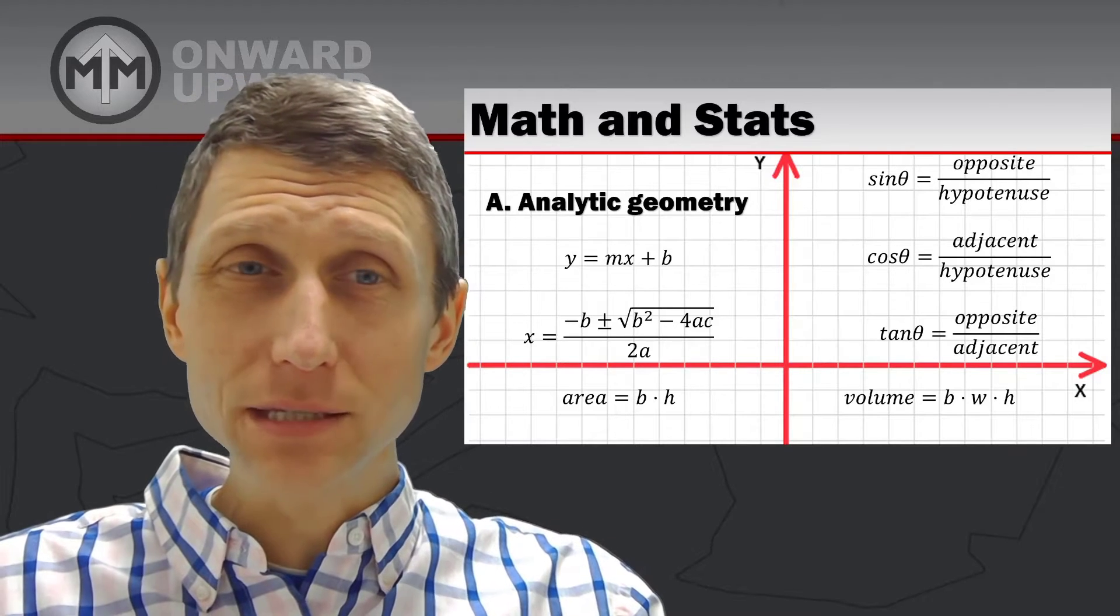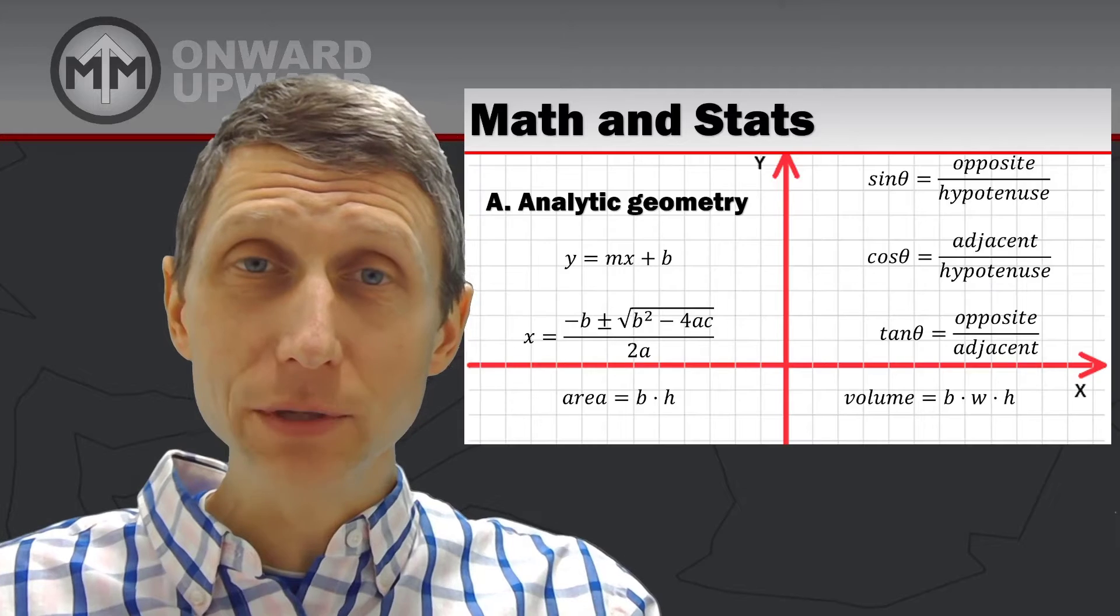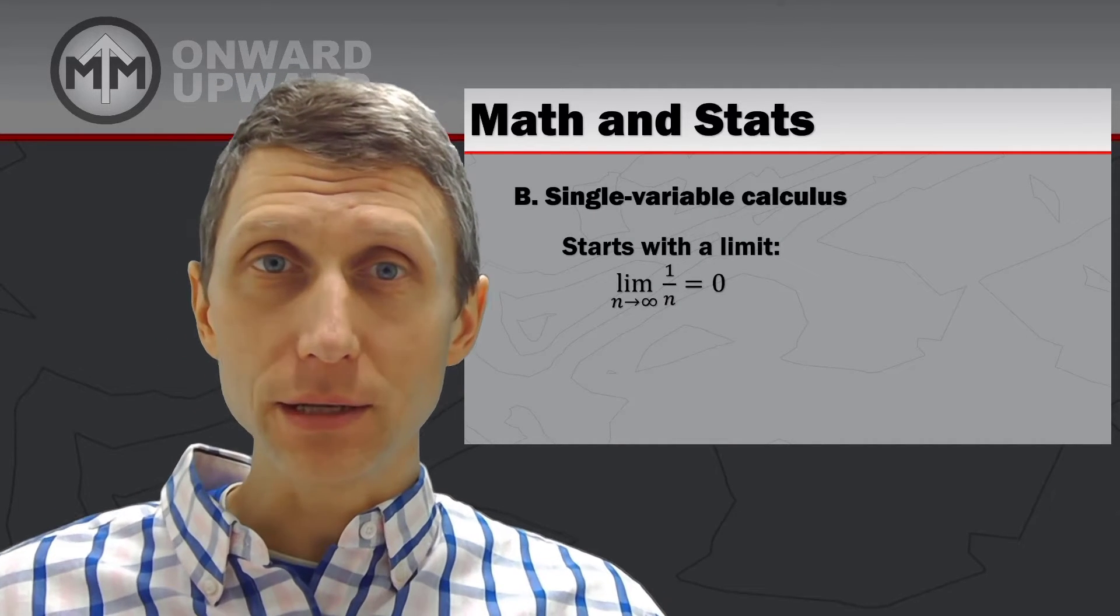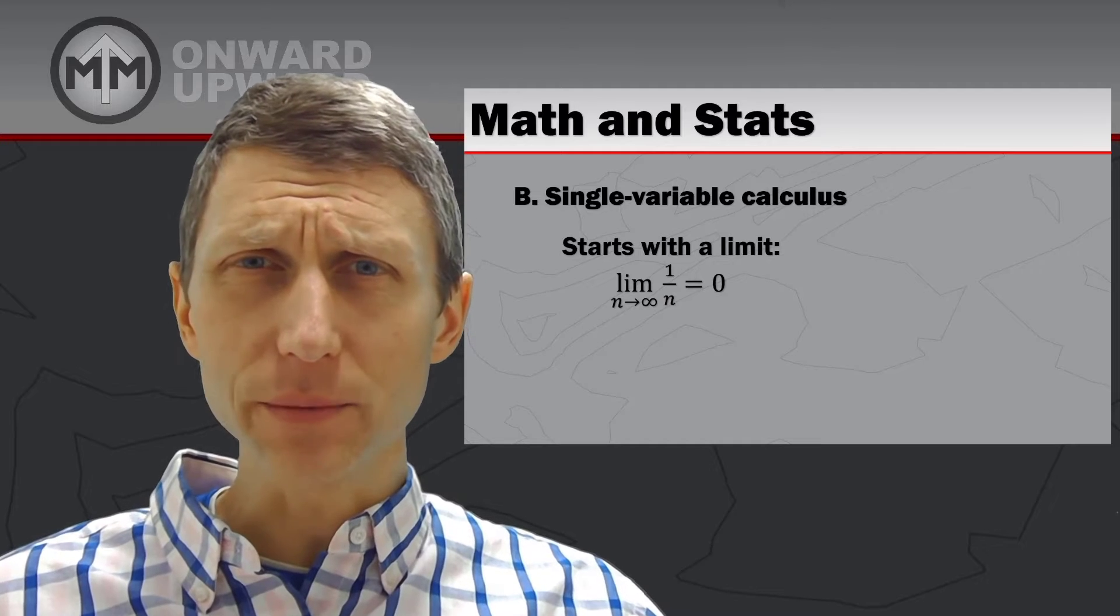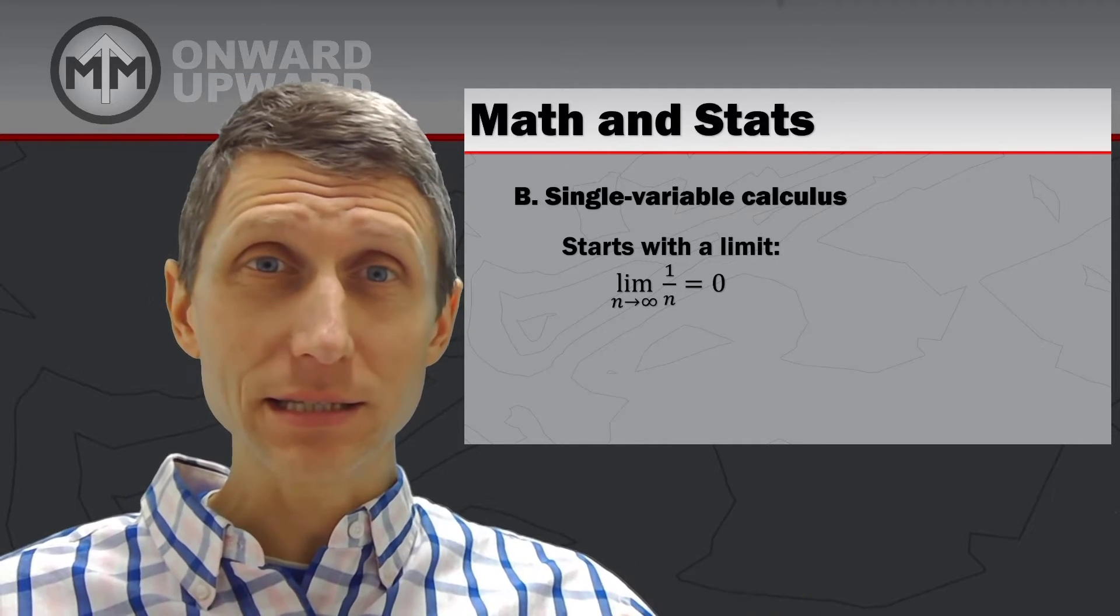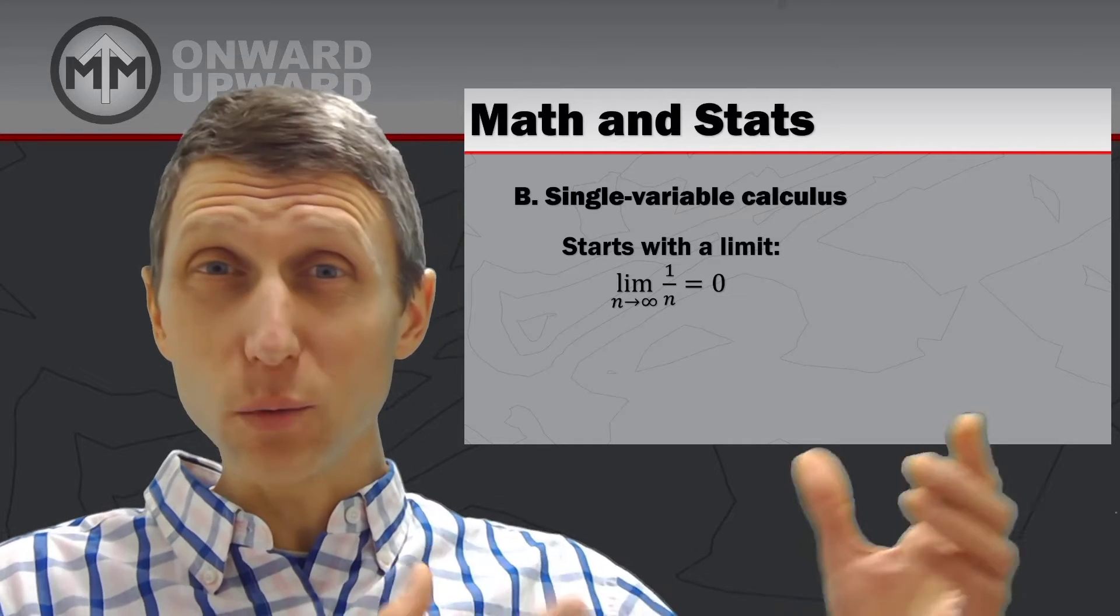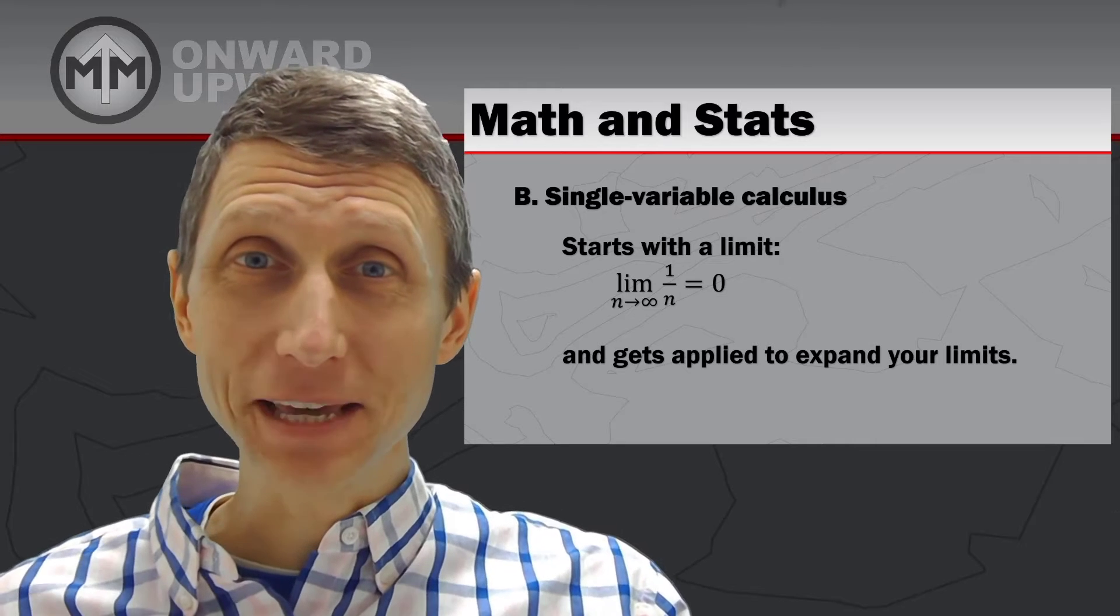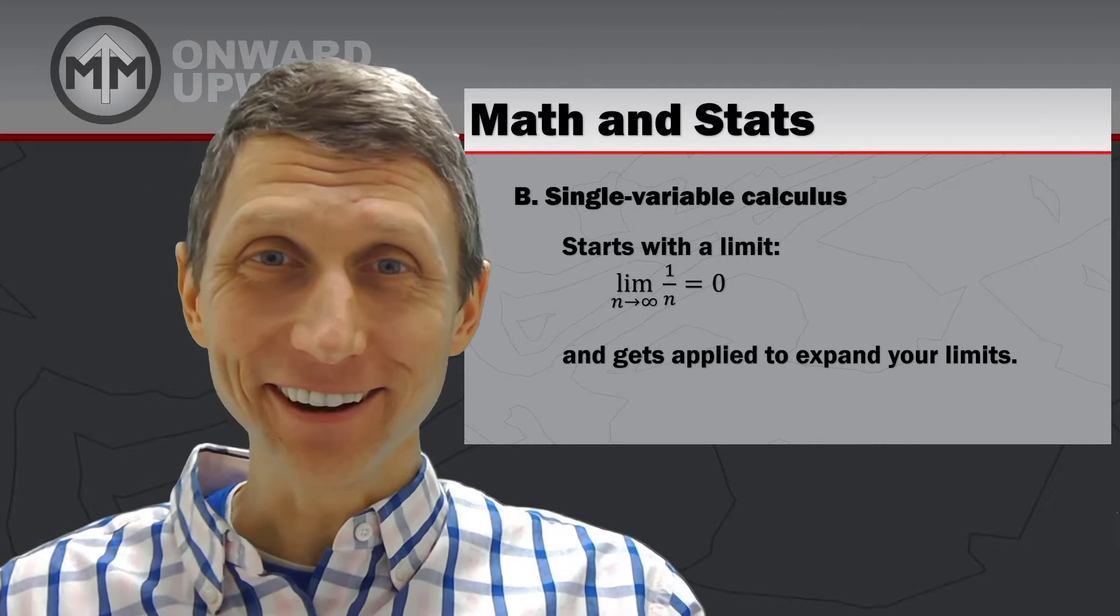But again, analytic geometry is some of the basics. But as we advance from geometry, we get into things like calculus, where we start with limits. And anytime you start with calculus, you start with limits. And what's the limit of 1 over n? Well, when we take a look at this, as n gets to infinity, you get 1 over infinity. What's that? Well, it's 0. And then it gets more applied to expand your limits.